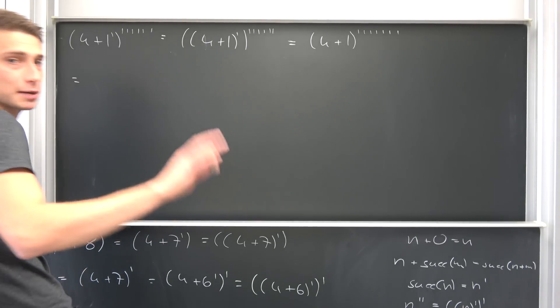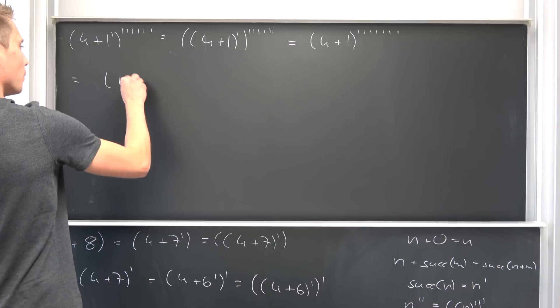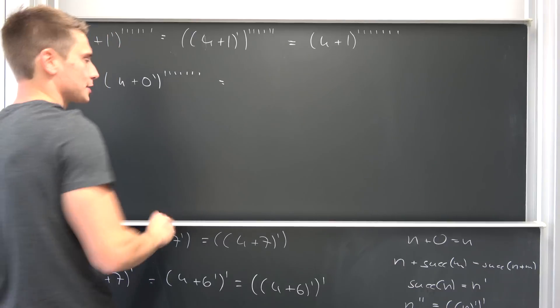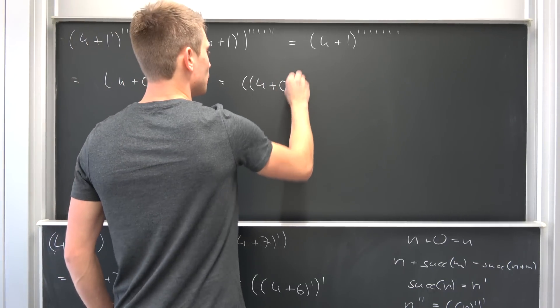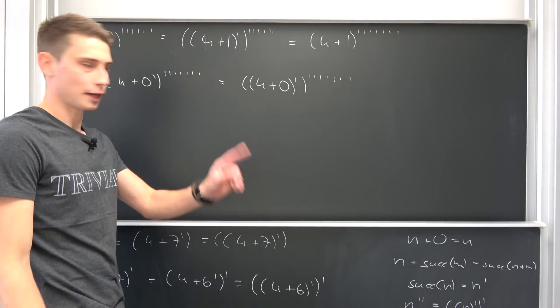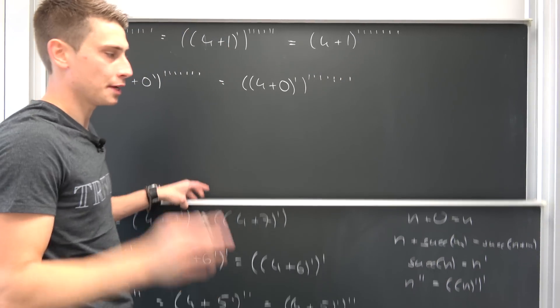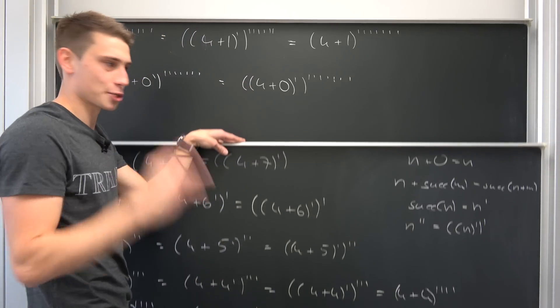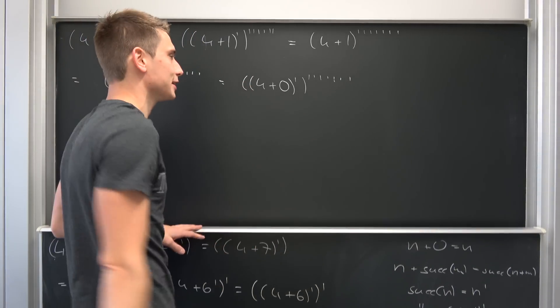So, this is nothing but, and here comes the really cool part. This is 4 plus 0 prime. And this is nothing but 4 plus 0 prime. And maybe you can already see it. But 4 plus 0 is nothing but 4. And this is really cool. This is where this little rule applies.